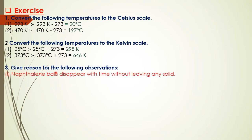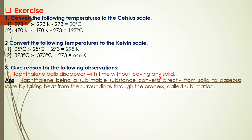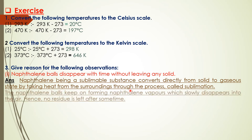Question 3: What is the reason for the following observation? Naphthalene balls disappear with time without leaving any solid. Answer: Naphthalene being a sublimable substance converts directly from solid to gaseous state by taking heat from the surroundings through the process called sublimation. Naphthalene balls convert into naphthalene vapors which disappear into the air. Hence, no residue is left after some time.